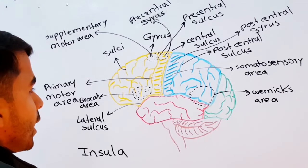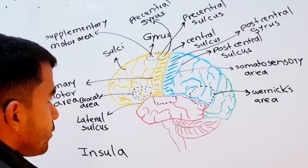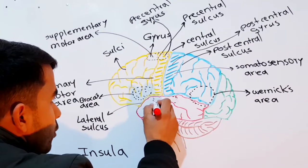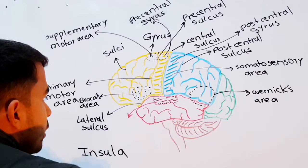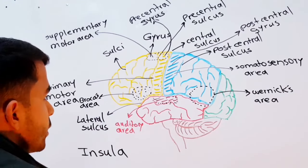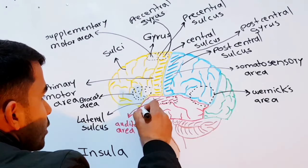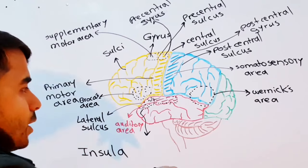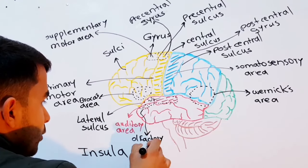We have the auditory area — the hearing area — located here on the temporal lobe. We also have the olfactory area, located deep inside the temporal lobe, which is responsible for the sense of smell.